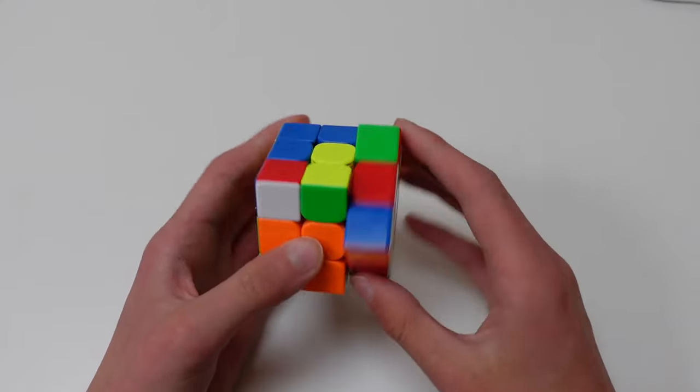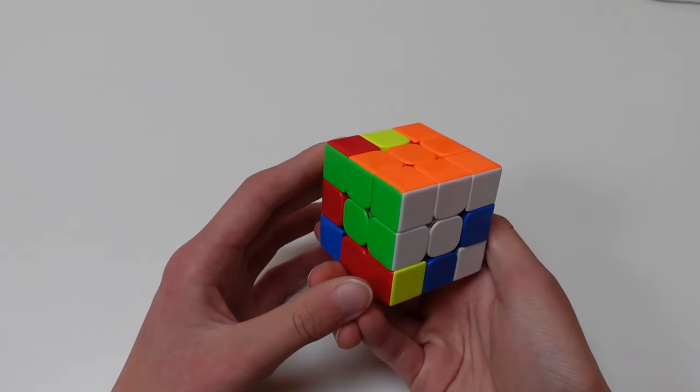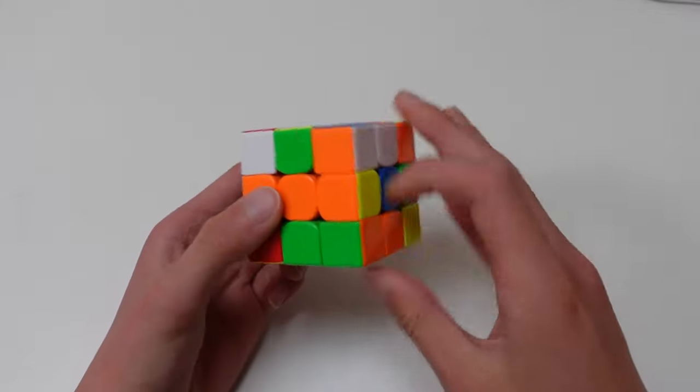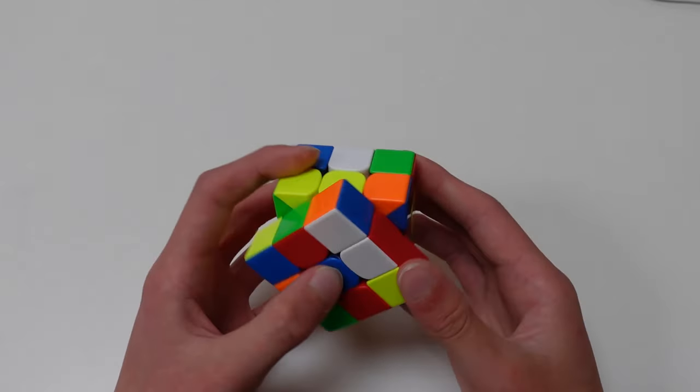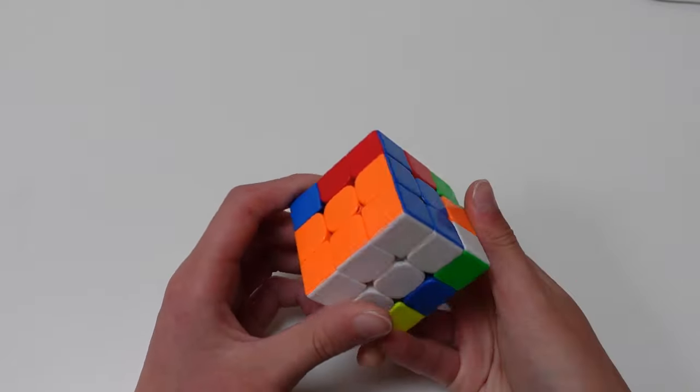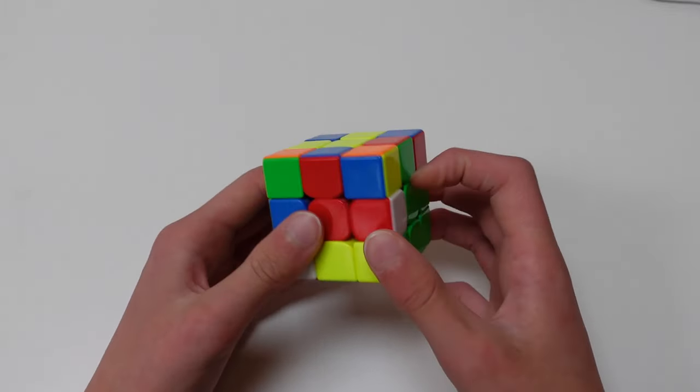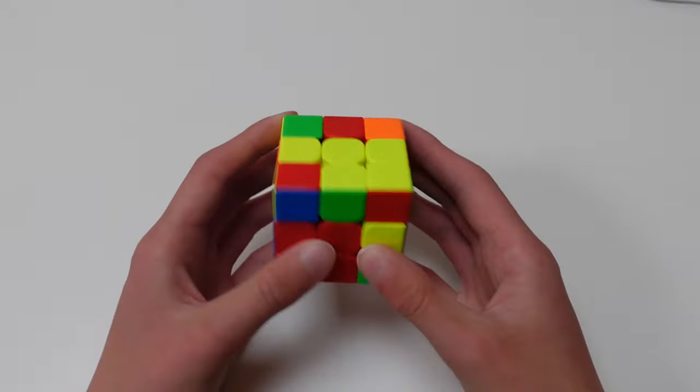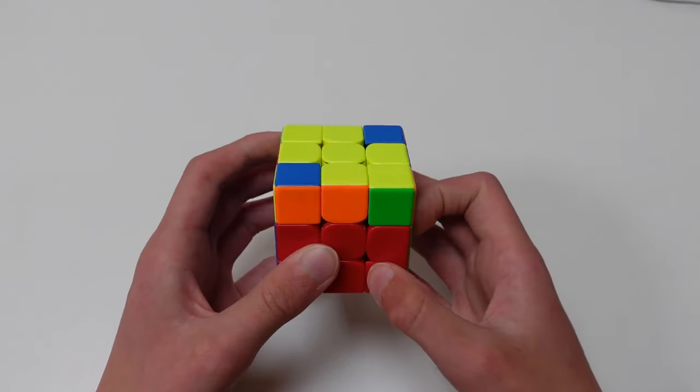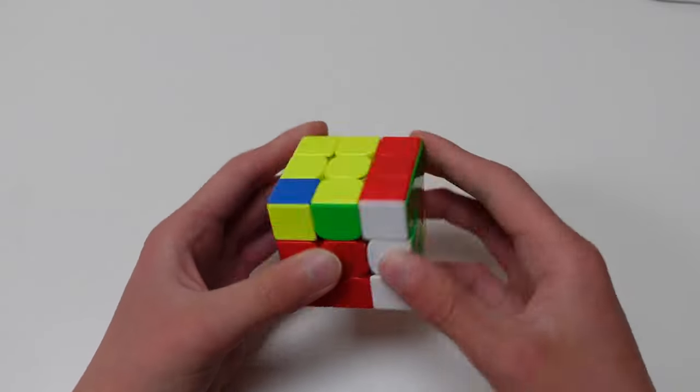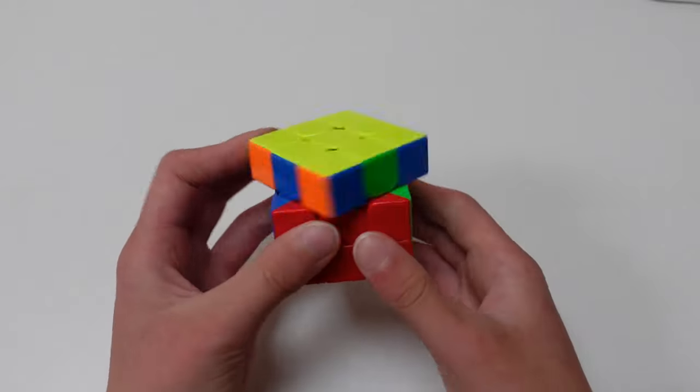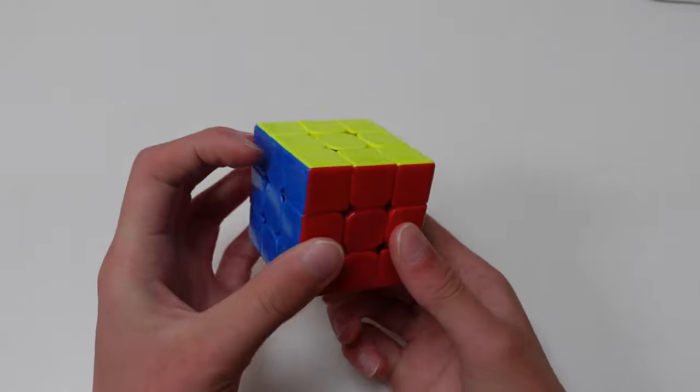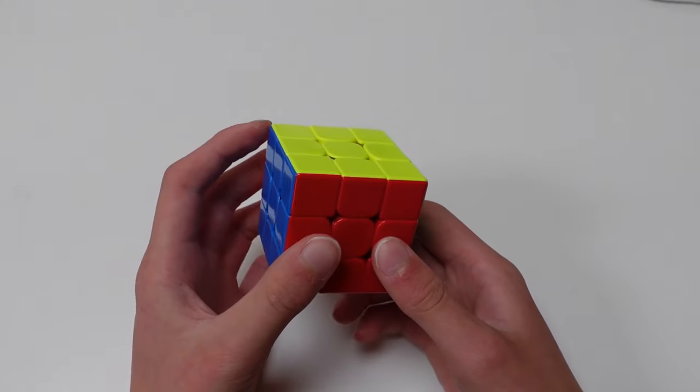Number 6, Petrus. In Petrus, you do a technique which is called block building. First, you make a 2x2x2 block, and then expand it to a 2x2x3. After this, you orient the remaining 7 edges similar to ZZ. Then, you solve the rest of the first two layers, and this gives you a cross on top. Here, you solve the last layer in any of the ways we talked about previously. The Petrus method used to be pretty popular, but was slowly overtaken in popularity by Roux and ZZ.